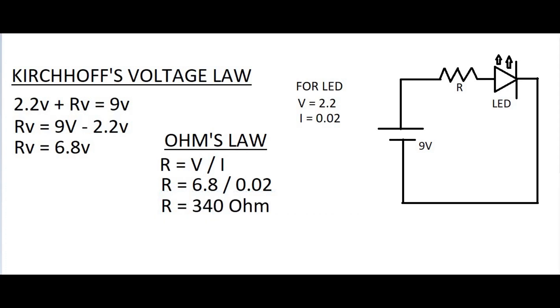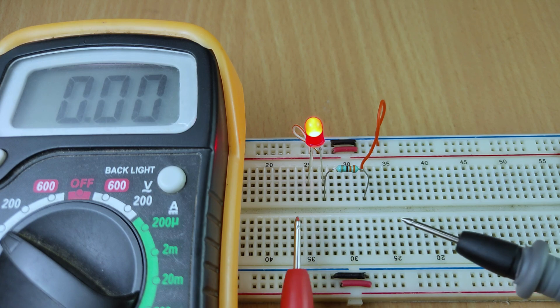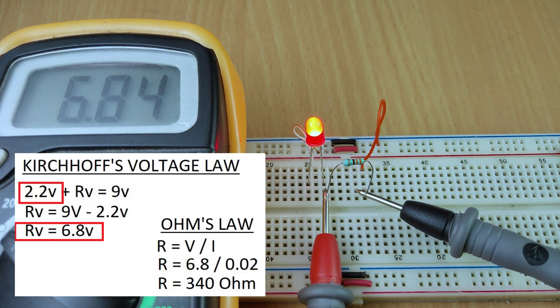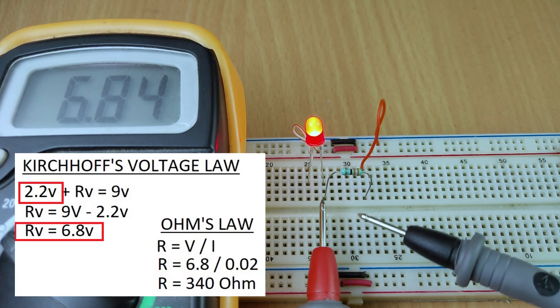Use the closest value of resistor you have. There is no need to use the exact same value. Now by measuring the voltage across the resistor and LED, we can clearly see the above calculated values.